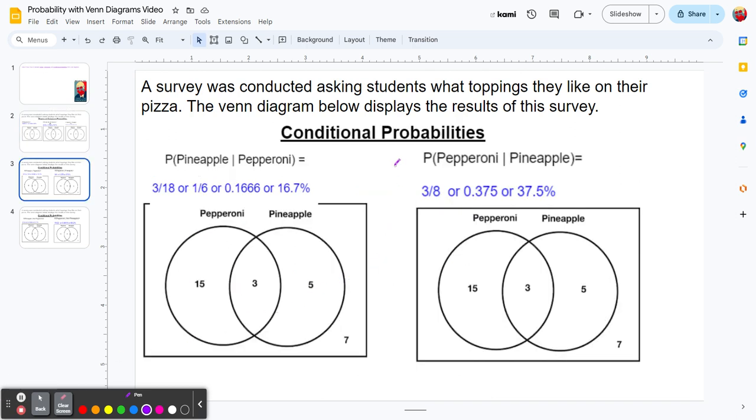Now let's switch gears and look at conditional probabilities. This first one is the probability that someone prefers pineapple on their pizza, given they like pepperoni on their pizza. The condition is that they like pepperoni.